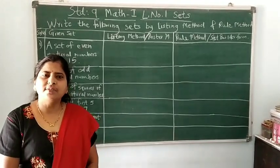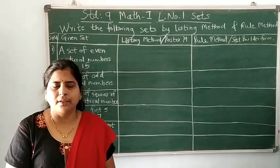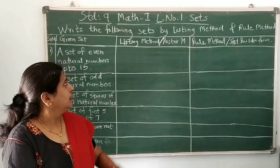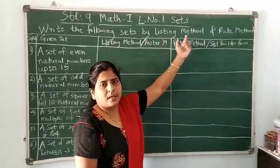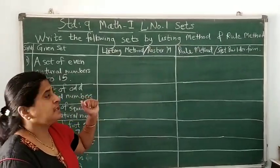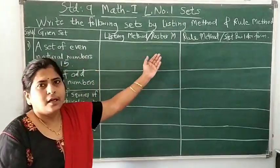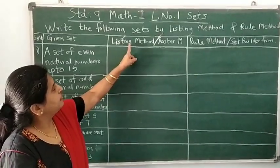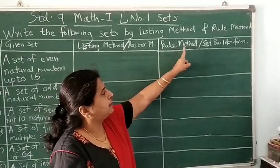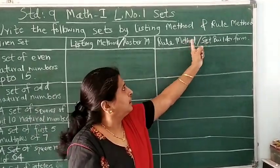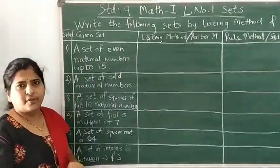Hello, today we are going to see how to write sets using both methods. Write the following sets by listing method and rule method. This is our question. We can use either the listing method or roster method — they are one and the same. And the rule method, also called set builder form — both denote the same method. Let's see what the first set given to us is.